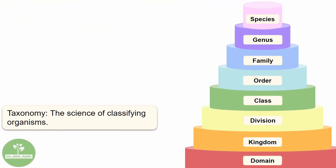Taxonomy, otherwise known as systematics, is the science of classifying organisms. In schools today, we typically learn about the Linnaean system of classification, which was created by Carl Linnaeus. You might recognize some form of this pyramid — as you move up through the taxonomic levels, each step becomes more exclusive than the last, until you reach the species level, which only has one member.